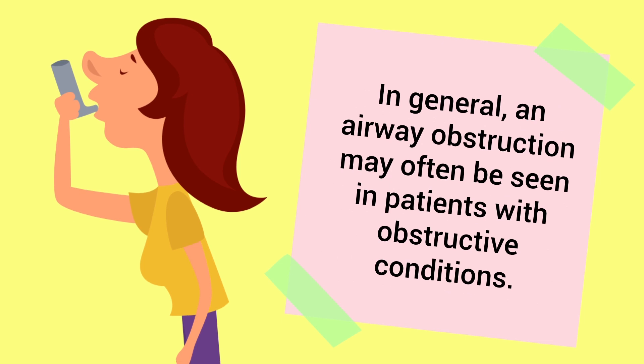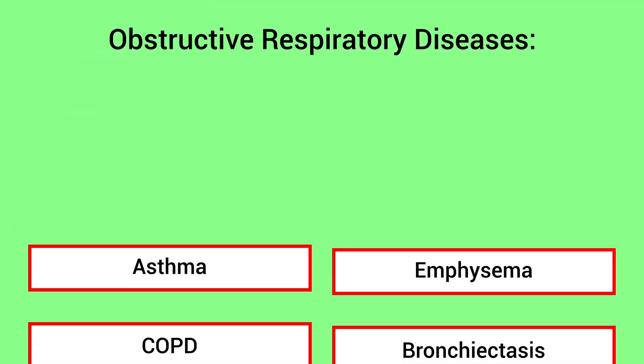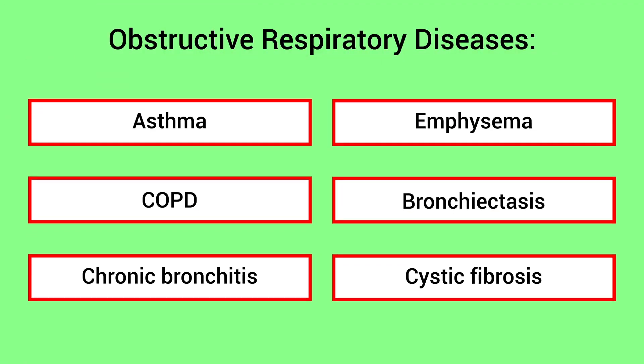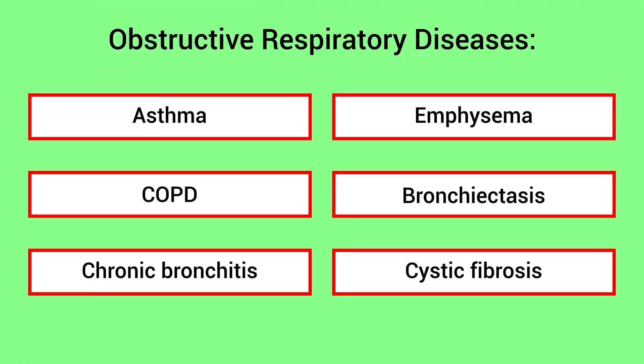In general, an airway obstruction may often be seen in patients with obstructive conditions. Some examples include asthma, COPD, chronic bronchitis, emphysema, bronchiectasis, and cystic fibrosis.